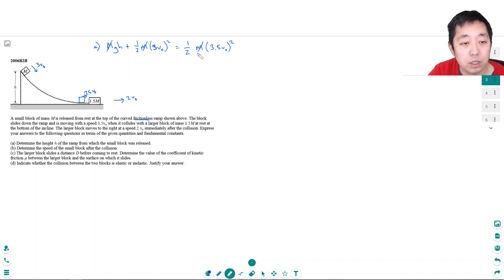So if I'm going to divide by M, and then I will bring it over to here and then divide by G. So GH equals one half 3.5V0 squared, minus one half 3V0 squared, and then I'm going to divide by G. So H is equal to one over two G. I can factor that one half out. So this I can do 3.5 squared is 12.25, and then three squared is nine. So that's the difference.